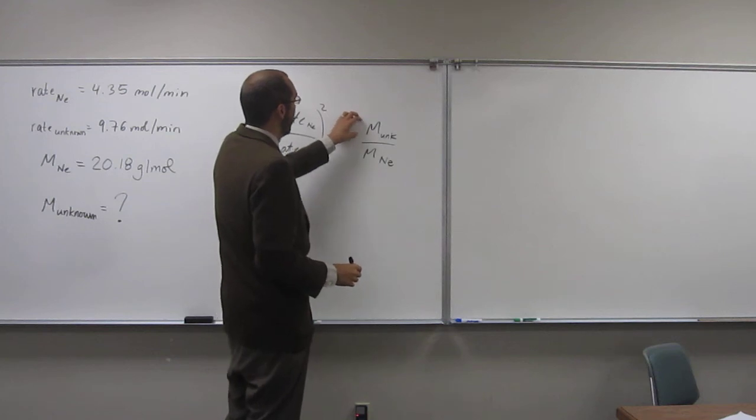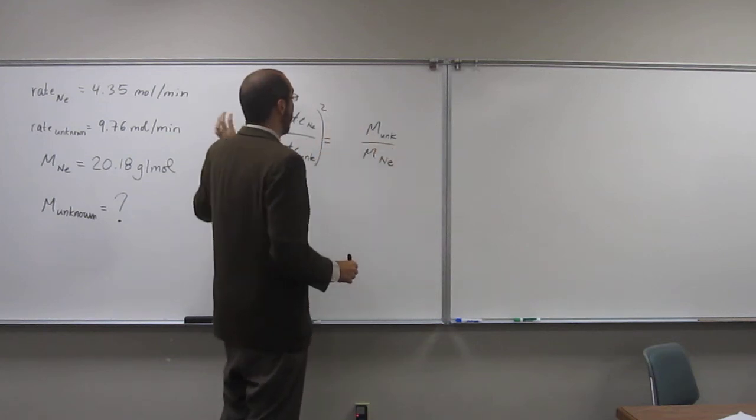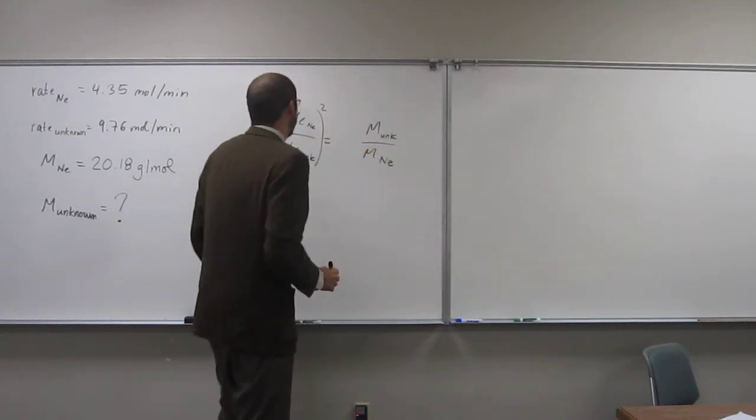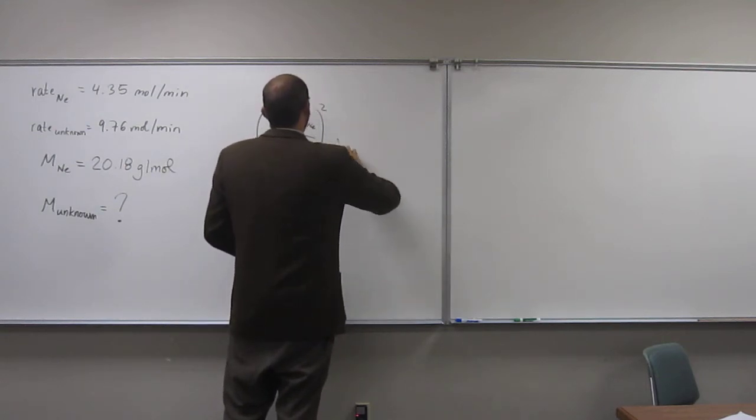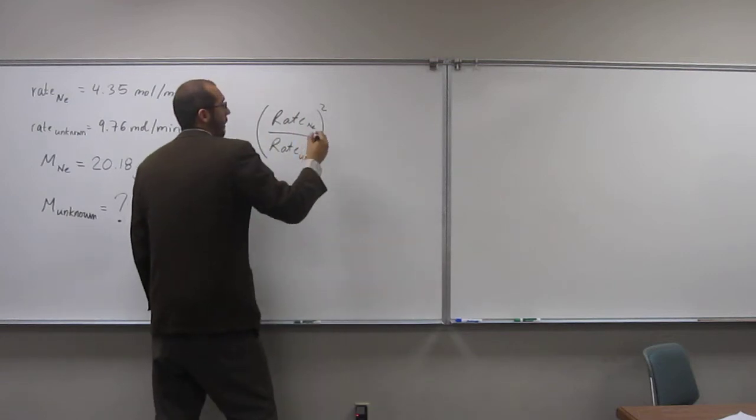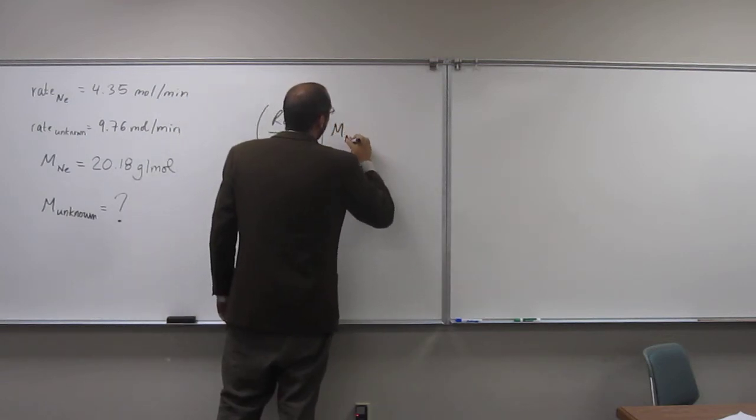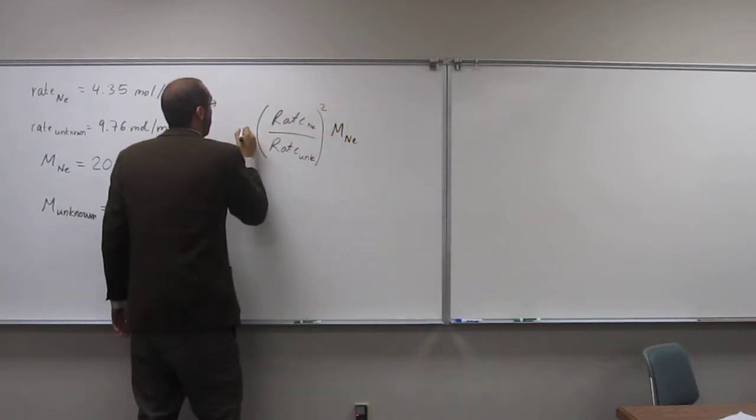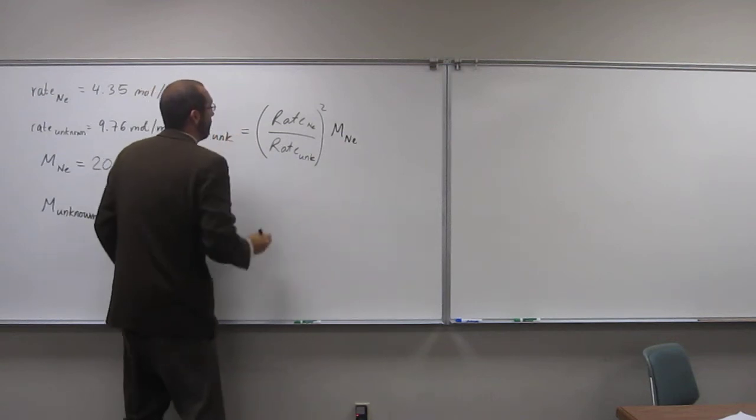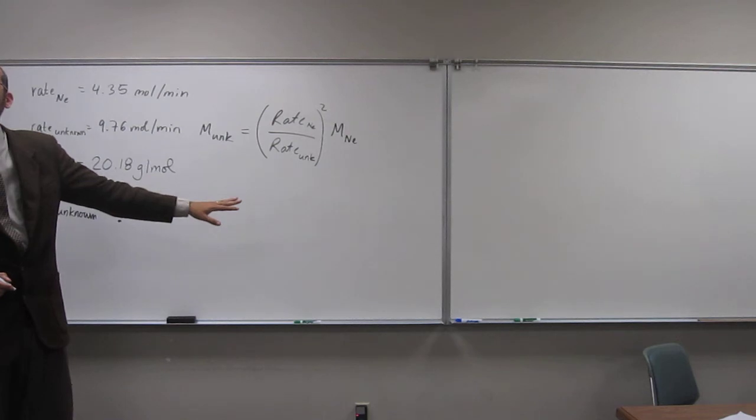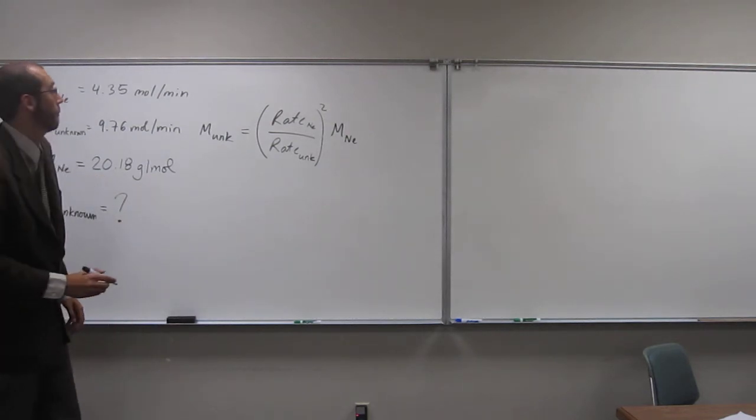So now let's multiply both sides by the molar mass of neon. Okay, so when we do that, that's going to be the molar mass of the unknown gas. Is everybody okay with that sort of arrangement? Okay.